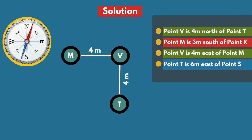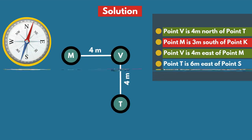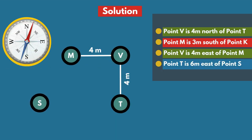Next statement: Point T is 6 meters east of point S. Here, this is point S, and point T is 6 meters east of point S.